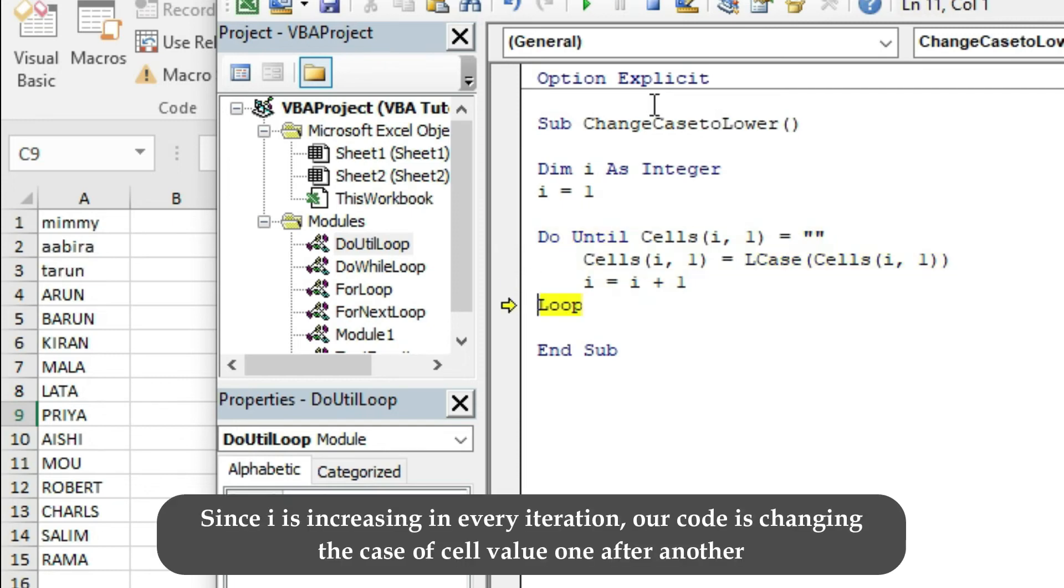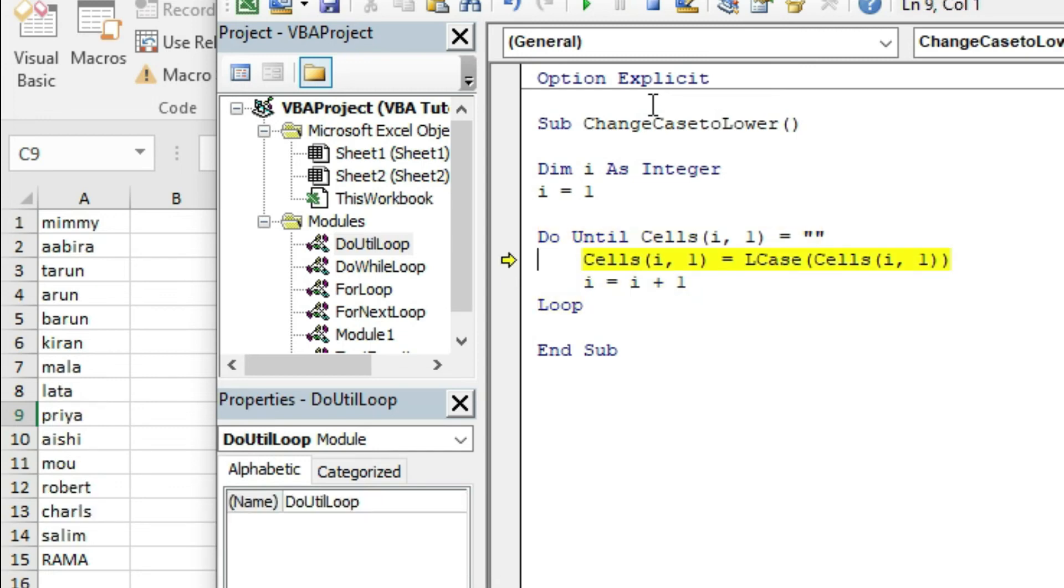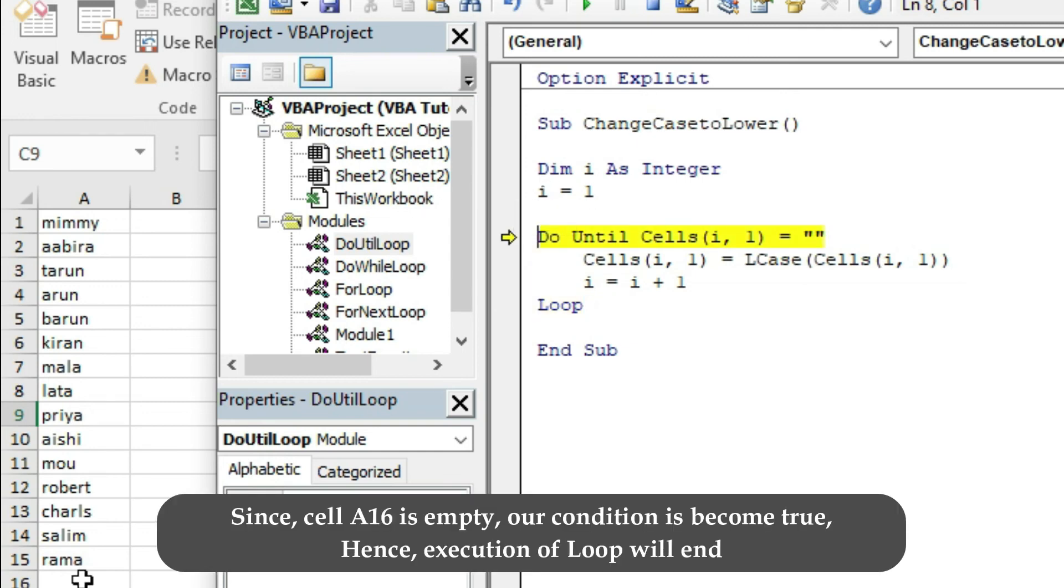Since i is increasing in every iteration, our code is changing the case of the cell value one after another. Since cell A16 is empty, our condition has become true, hence execution of loop will end.